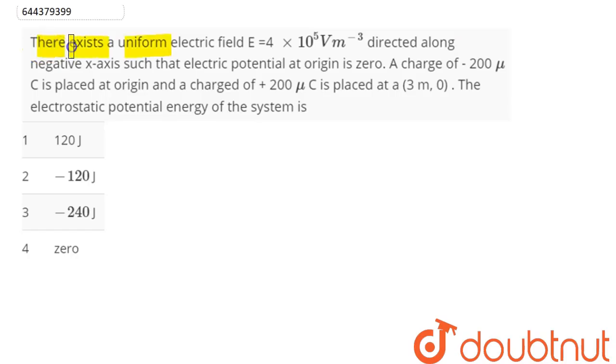Question is, there exists a uniform electric field E equal to 4 into 10 power 5 volt per meter directed along negative x-axis such that the electric potential at origin is 0. A charge of minus 200 microcoulomb is placed at origin and a charge of plus 200 microcoulomb is placed at (3,0). The electrostatic potential energy of the system is,